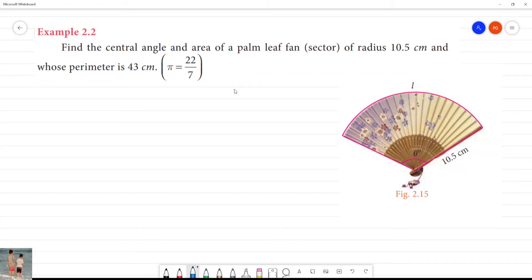Find the central angle and area of a palm leaf fan. If we can get a sector, this is the central angle, this is the theta. If we can get theta, we can get the area.